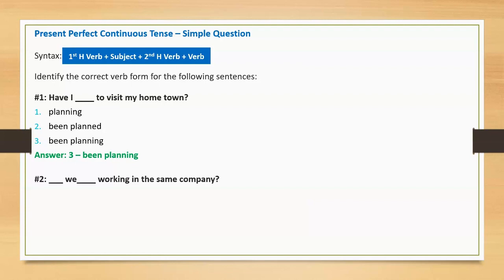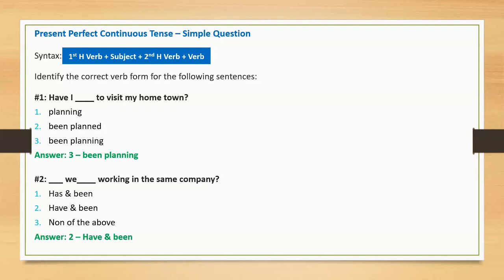Question two: 'Blank we blank working in the same company?' Option one: has been. Option two: has and been. Option three: have and been. Option four: none of the above. Correct option: have and been. Full sentence: 'Have we been working in the same company?'